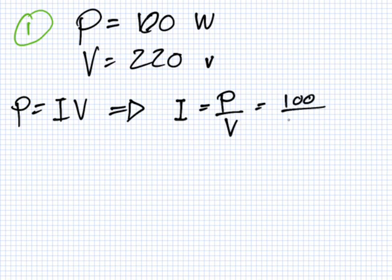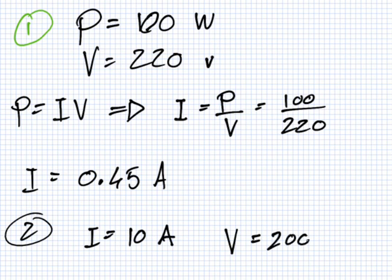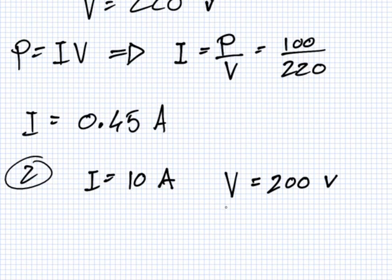100 watts. And what else do you know? 120 equals. And what do I want? Current. Okay, so I can say P equals IV. This means I equals P over V. So this will be 100 over 220. Then I equals 0.45.